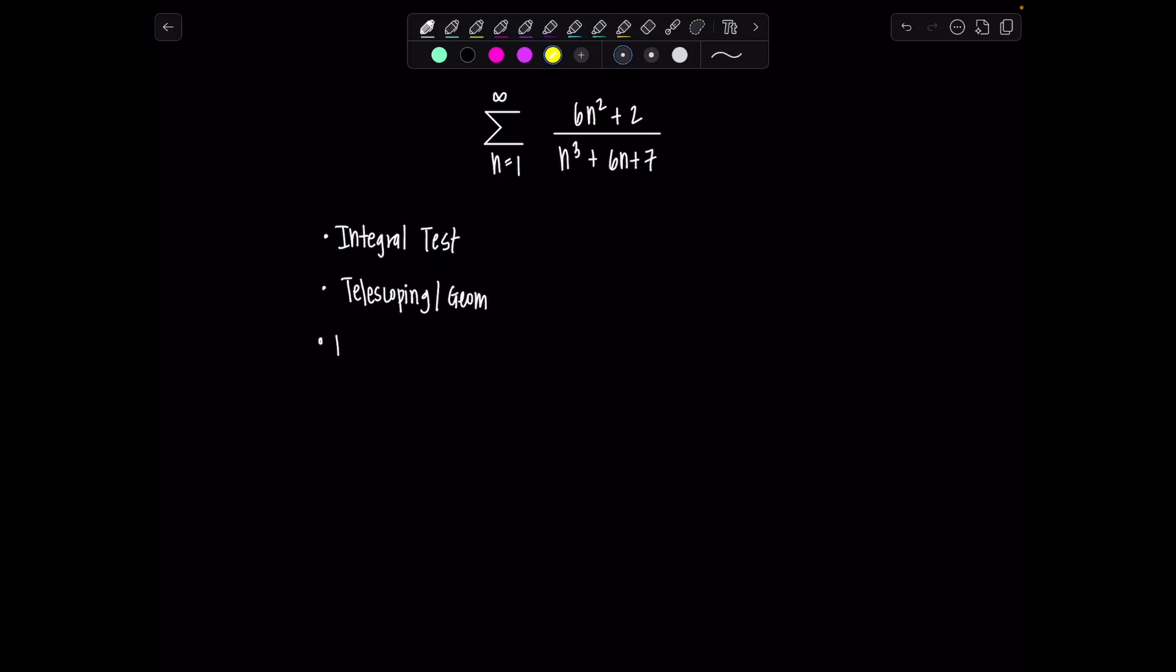Then you learned about direct comparison and limit comparison tests, and that's popping out at me as a good choice because most of the time when you have what looks kind of like a rational function, like polynomial in n over polynomial in n, even if it's not a polynomial. Limit comparison is usually a good way to go or direct comparison.